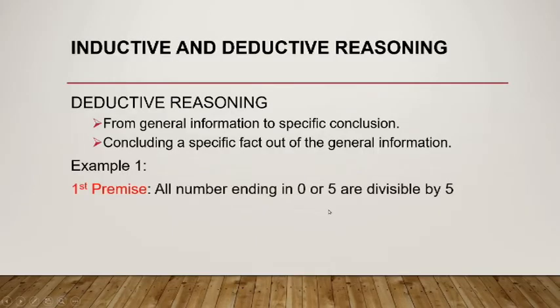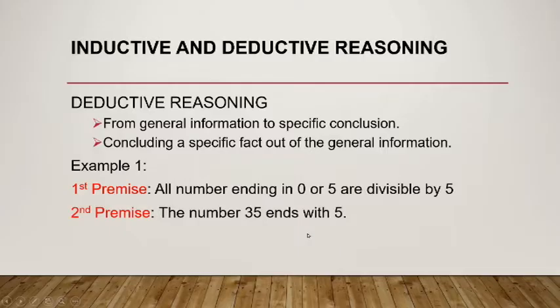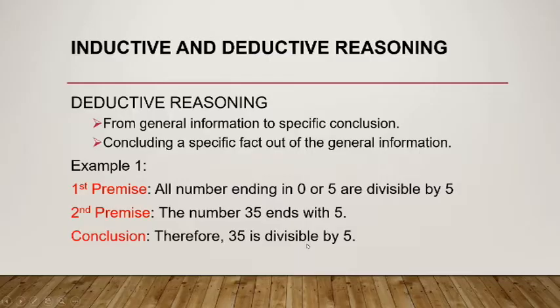Example number 1. Given the first premise, all numbers ending in 0 or 5 are divisible by 5. Second premise, the number 35 ends with 5. Conclusion, therefore 35 is divisible by 5.